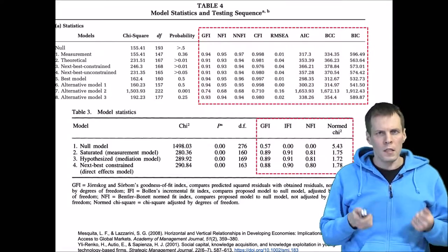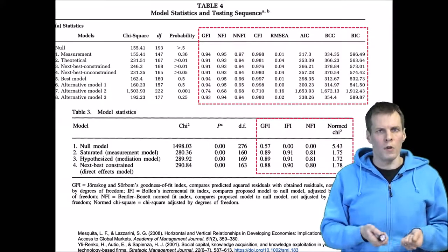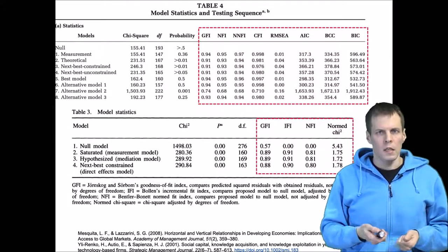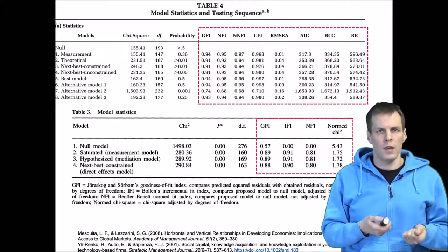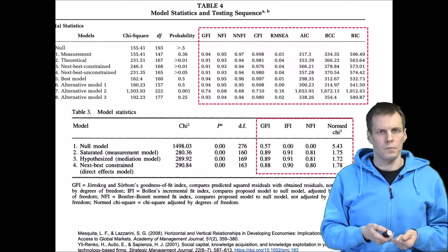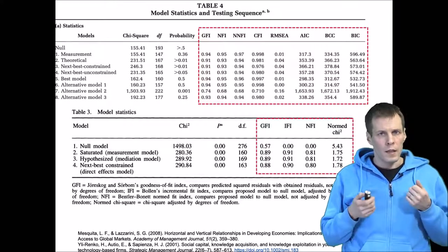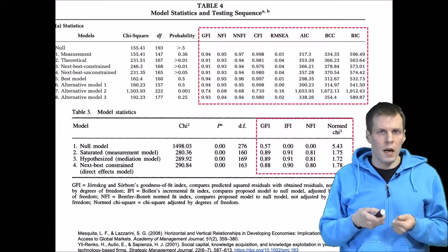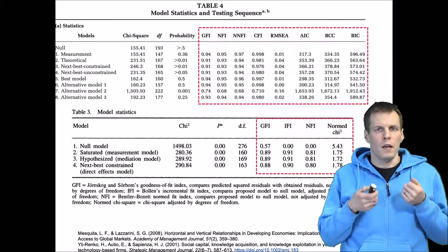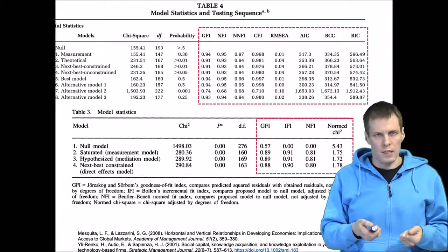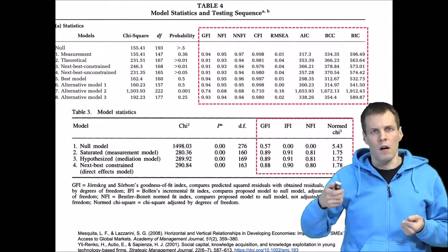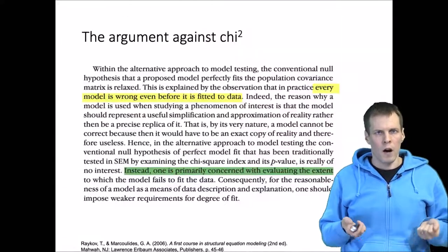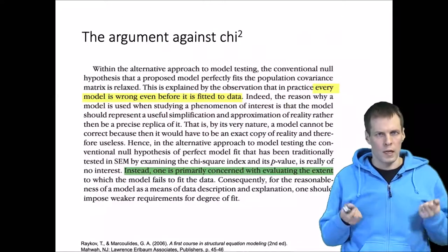Let's take a look at what is the argument for these indices. The argument for these indices is not actually an argument for the indices as much as it is an argument against the chi-square.